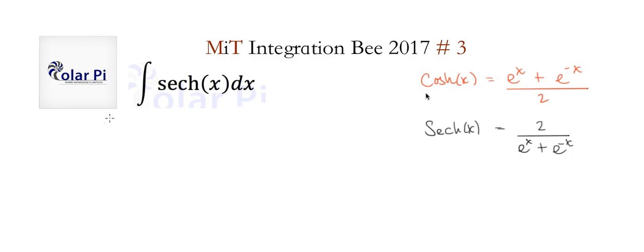Hey guys, problem 3 here. Remember that cosh x is e to the x plus e to the minus x all divided by 2.